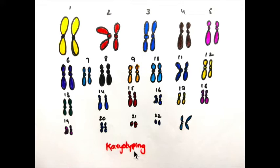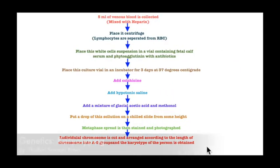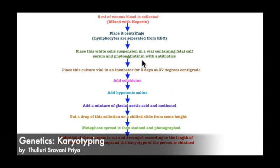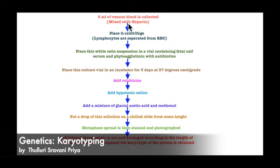Now we'll see the procedure of karyotyping. There is a flowchart for this procedure. First we have to collect 5 ml of venous blood, which will be mixed with heparin. Heparin acts as an anticoagulant which prevents the blood from clotting.